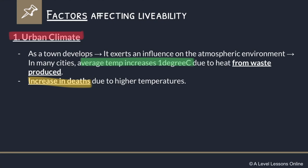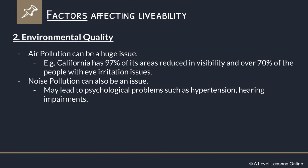Environmental quality is another factor that can affect livability. If you're stuck in a place with constant haze, bad air pollution, and noise pollution, it's going to affect your livability. Air pollution can be a huge issue — it can affect your lungs and your health. In California, 97% of its cities have actually reduced visibility, and over 70% of the population has eye irritation issues, which is quite severe if you think about having to rub your eyes every single day.